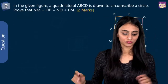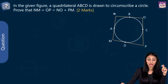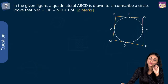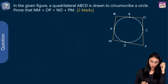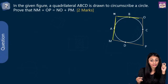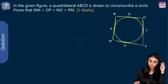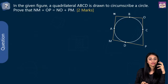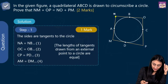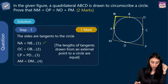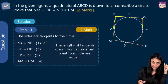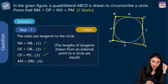Here we have our first question. In this figure, a quadrilateral ABCD is drawn to circumscribe a circle. We need to prove that NM plus OP is equal to NO plus PM. First of all, this is a circumscribed figure and these sides are tangents to the circle, intersecting the circle at exactly one point. We know that the length of tangents drawn from an external point to a circle are equal in length. So if N is the external point, NA and NB are equal. If O is the external point, OC and OB are equal. If P is the external point, CP and PD are equal. And if M is the external point, AM and DM are equal. We mark these as equations 1, 2, 3, 4.